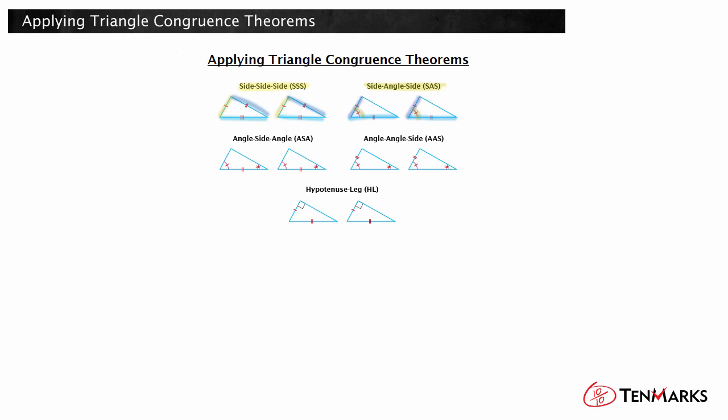Notice the A is between the two Ss, just as the angle is between the two sides in each triangle. There are also congruence theorems for when the triangles have two pairs of congruent angles and one congruent side. If the included sides are congruent, the triangles are congruent because of the ASA congruence theorem.